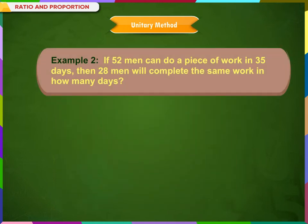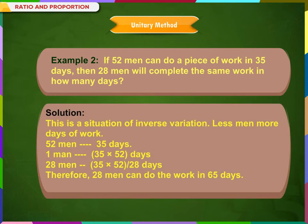Example 2: If 52 men can do a piece of work in 35 days, then 28 men will complete the same work in how many days? Solution: This is a situation of inverse variation — less men means more days of work. 52 men can do the work in 35 days, so one man can do the work in 35 × 52 days. Therefore, 28 men can do the work in 65 days.